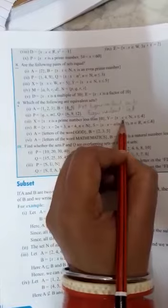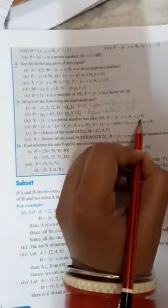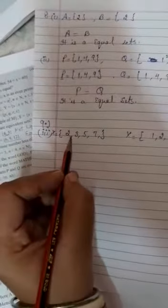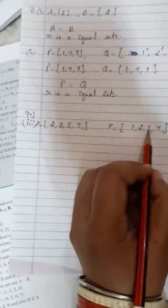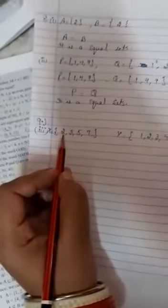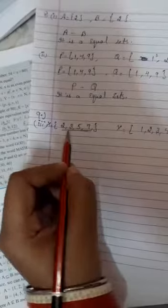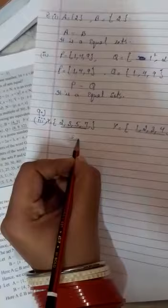Next, X is a set of prime numbers less than 10, and Y is a set where x belongs to N and x is less than or equal to 4. Set X is {2, 3, 5, 7} with four elements, and set Y is {1, 2, 3, 4} also with four elements, so these sets are equivalent.